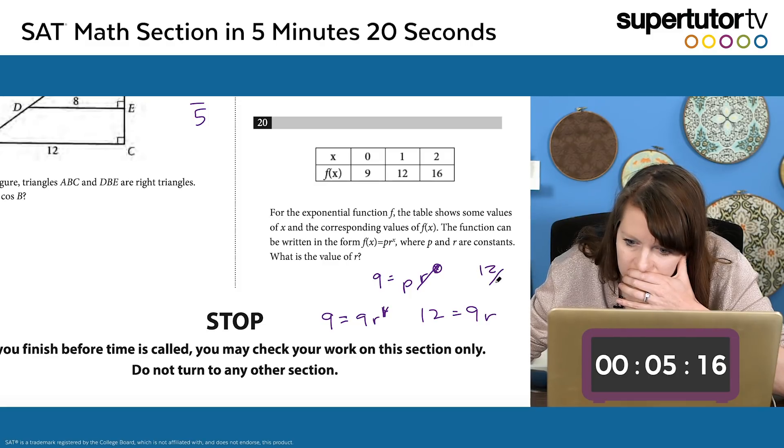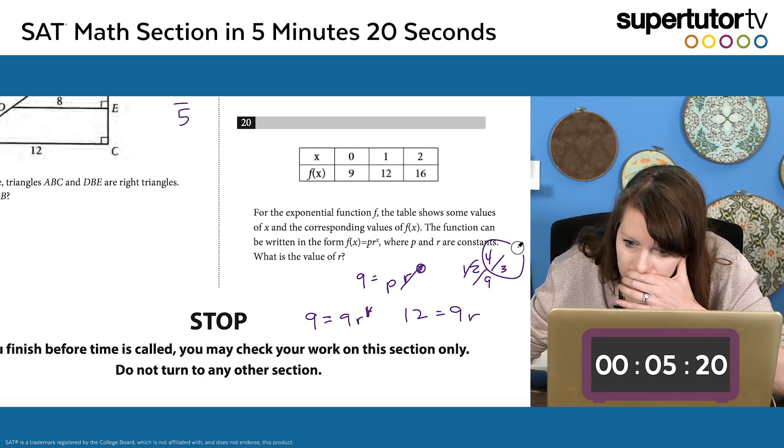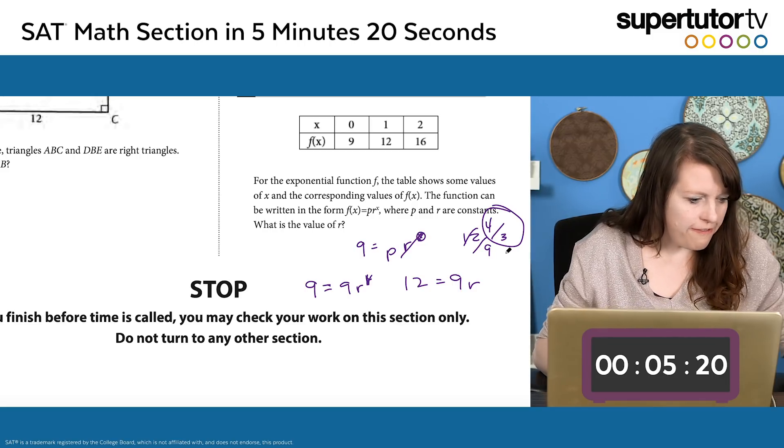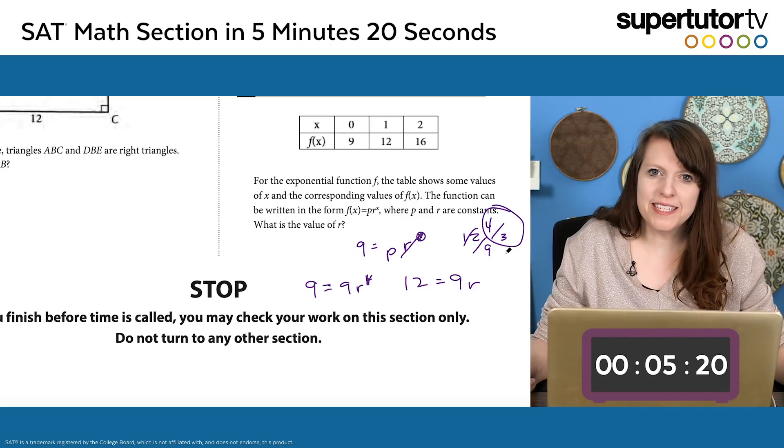And then I just divide by 9 and I get 4 thirds. Done.